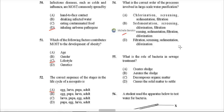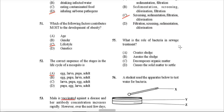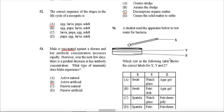Question 55: What is the role of bacteria in sewage treatment? Bacteria are decomposers — they feed off the organic matter within the sewage and help break down that organic matter. So that would be C.